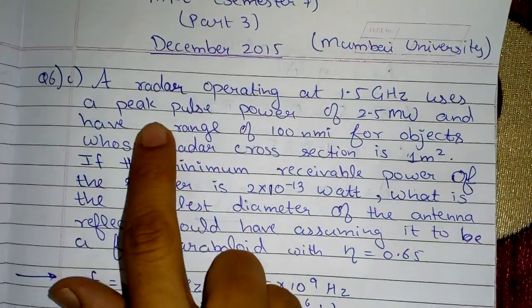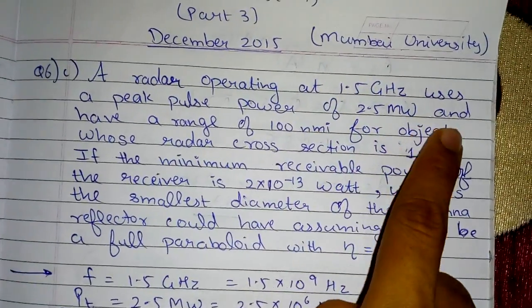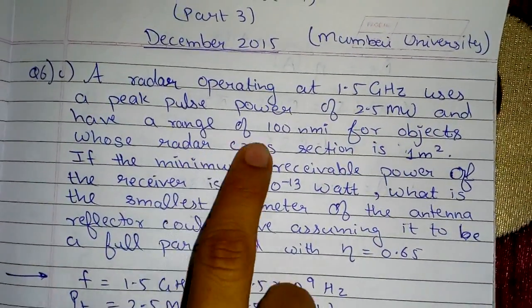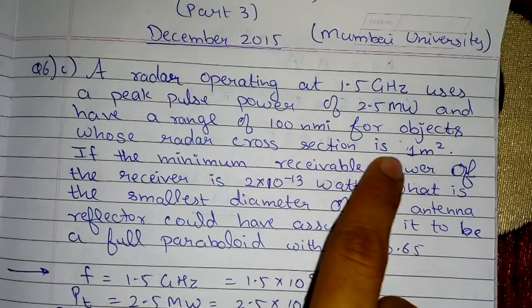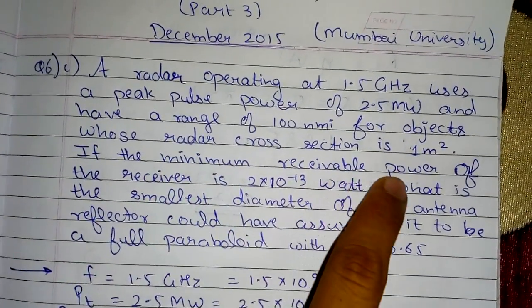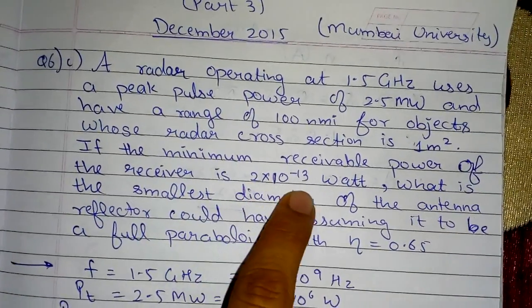The question is: A radar operating at 1.5 Gigahertz uses a peak pulse power of 2.5 megawatts and has a range of 100 NMI for objects whose radar cross section is 1 meter square.